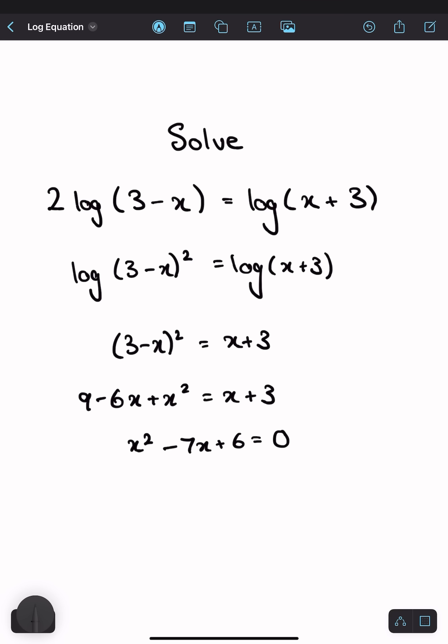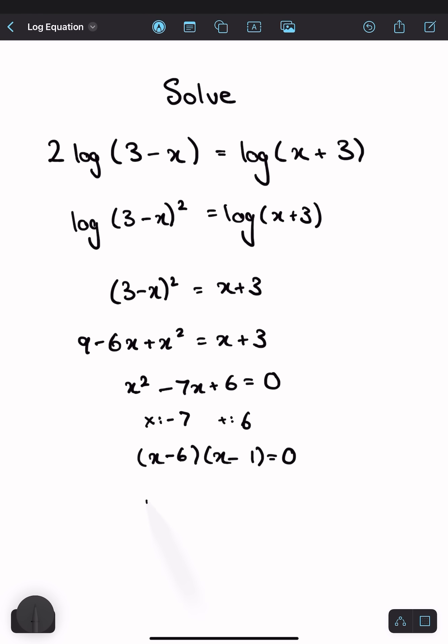Let's solve this quadratic equation by factorizing. That's (x - 6)(x - 1) = 0. This means x = 6 or 1.